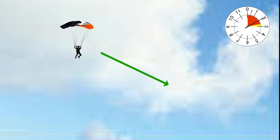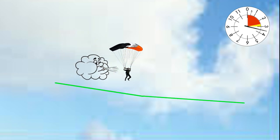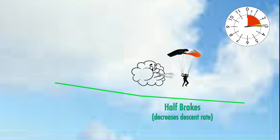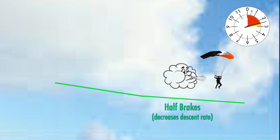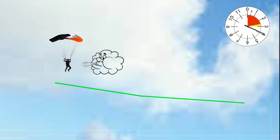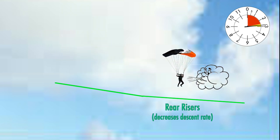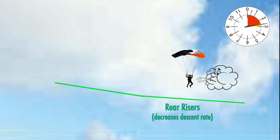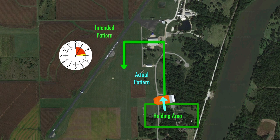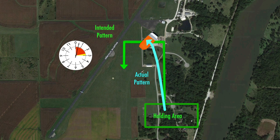If you are headed to your next entry point lower than intended, you can make your canopy glide farther through control inputs: half brakes with a tailwind, rear risers in a headwind. Consider cutting the corner from your downwind to base leg to shorten your total pattern length.